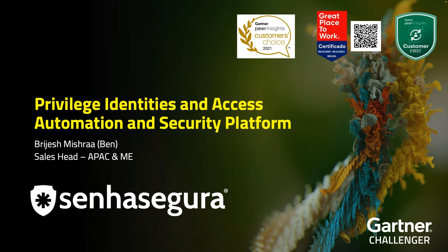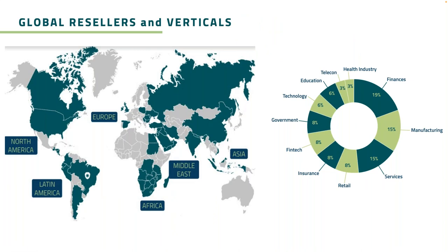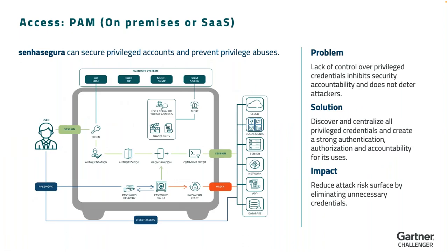Next is SenseCura — a new product introduced to Singapore. While there aren't many AI components, it's a very good solution. SenseCura is from Brazil, with branches and customers worldwide across different industries. It is a PAM — Privilege Access Management — solution. Where AI is used is to detect anomalous user behavior.